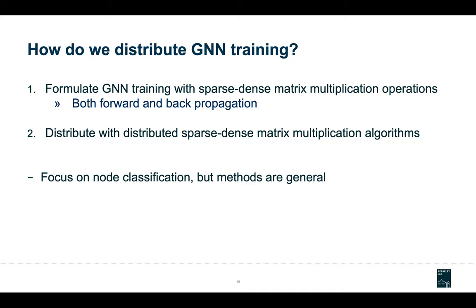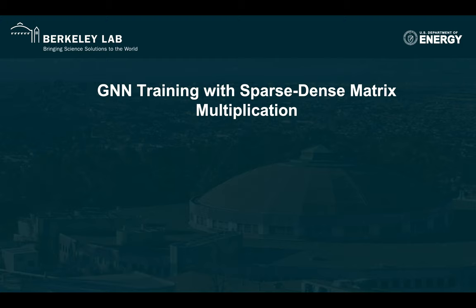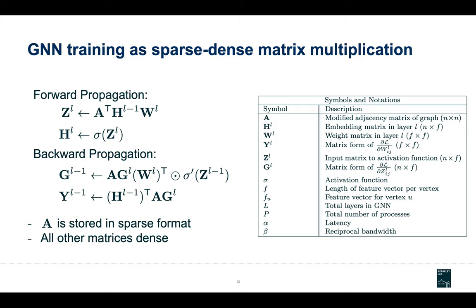How do we approach distributed GNN training? We essentially do two things. We first formulate GNN training as a series of sparse times dense matrix multiplication operations for both forward and backward propagation. After we've come up with this formulation, we leverage sparse times dense distributed matrix multiplication algorithms to distribute GNN training across multiple devices.